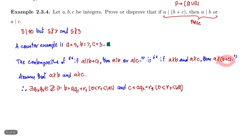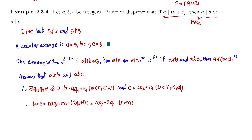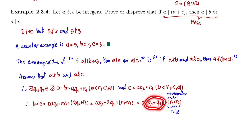Now try to write B plus C. B plus C is going to be AQ1 plus R1 plus AQ2 plus R2, which gives A times (Q1 plus Q2) plus (R1 plus R2). This number Q1 plus Q2 is an integer and must be the quotient, and R1 plus R2 must be the remainder by the division algorithm.